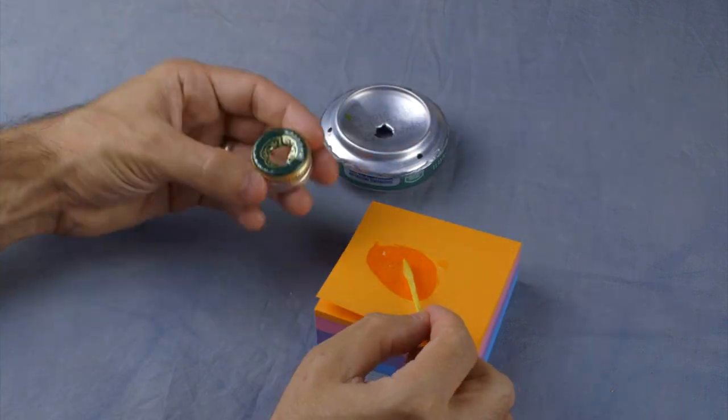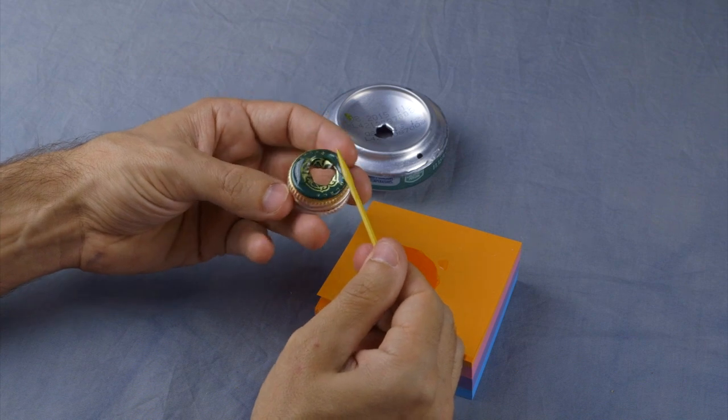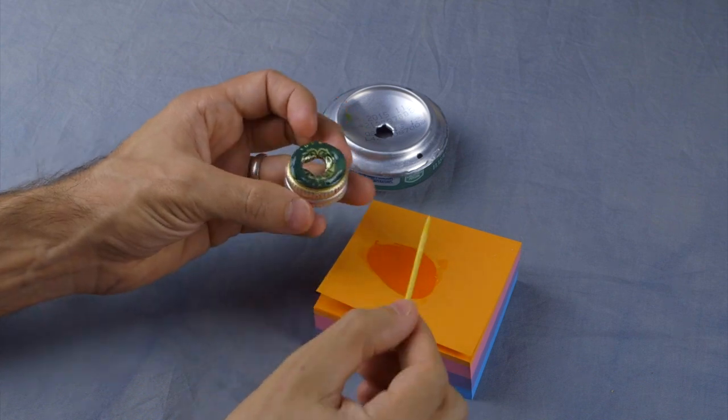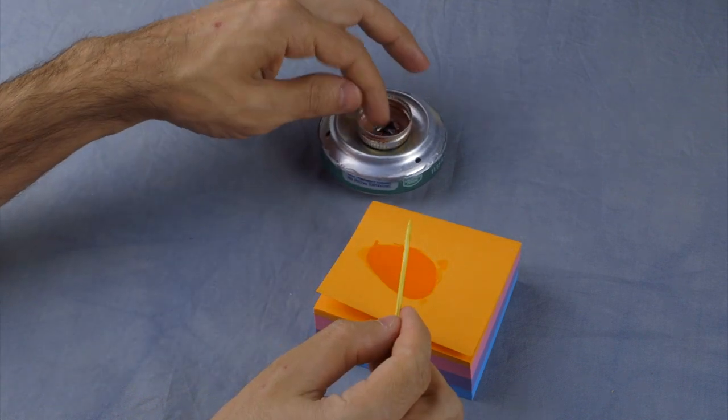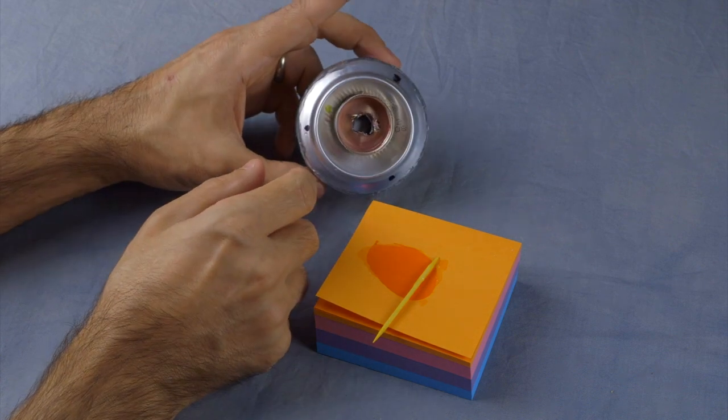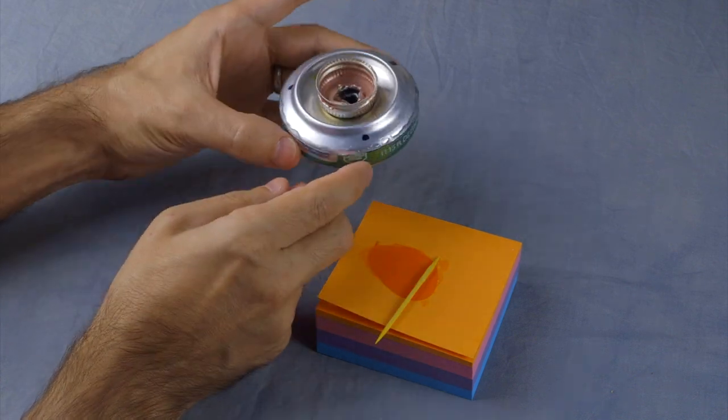Spread the remaining epoxy onto the flat side of the bottle cap and attach it to the base assembly, lining up the holes. Now let the epoxy set. This should only take a couple minutes.